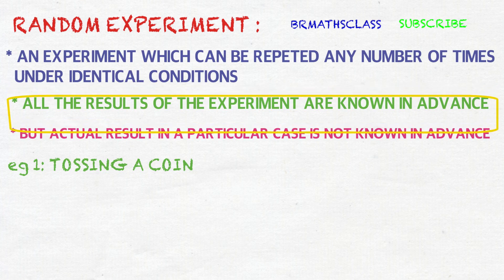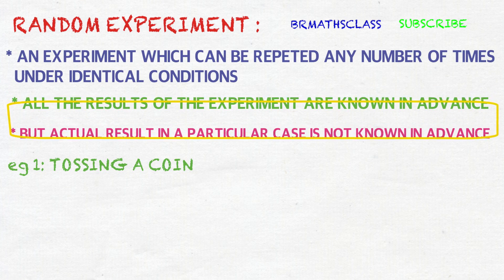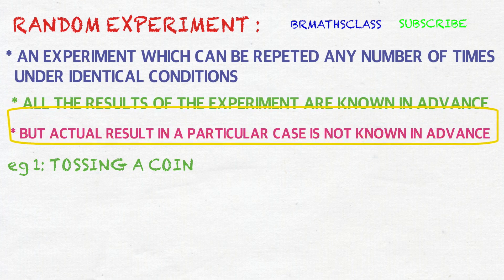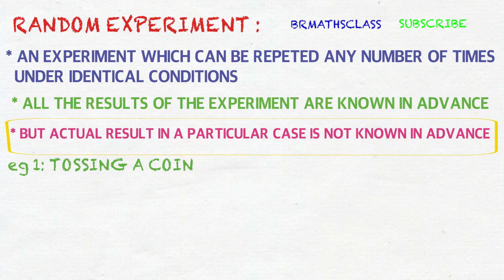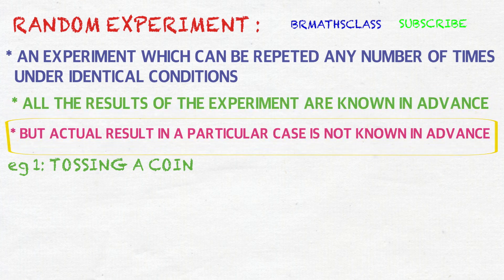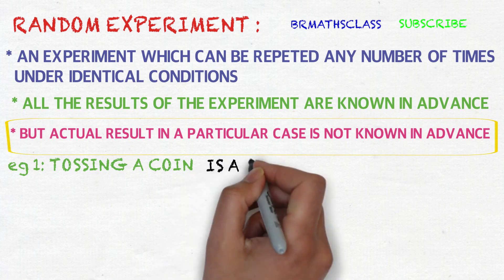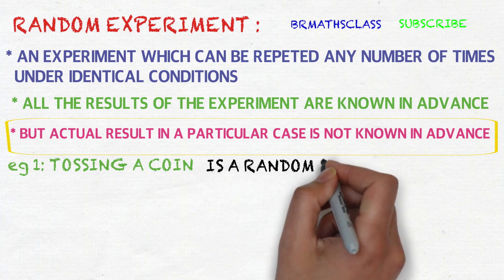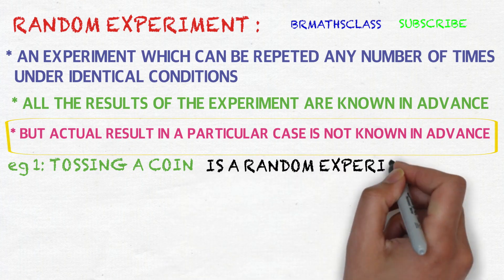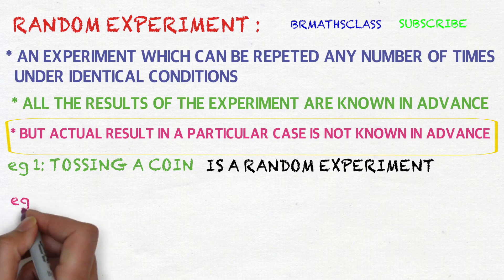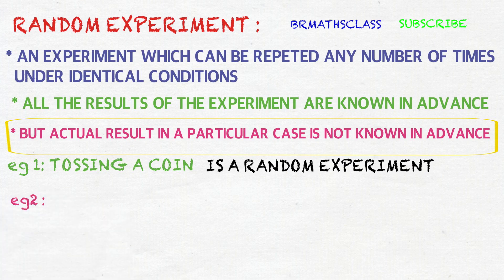Third condition: the actual result in a particular case is not known in advance. Suppose a coin is tossed and the coin is in the air — what it results exactly, we don't know. So tossing a coin satisfies all three conditions. Therefore, tossing a coin is a random experiment.